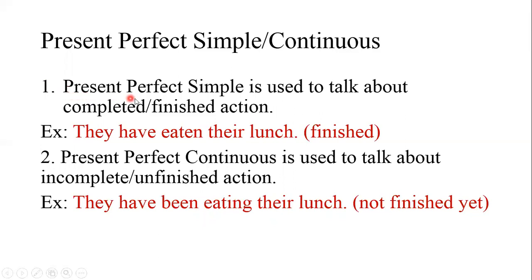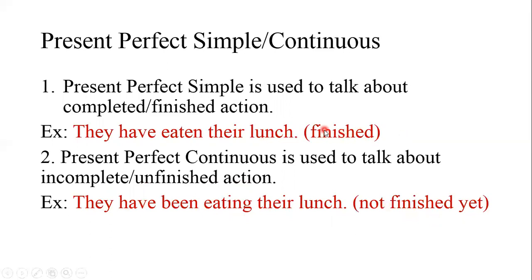Number one: present perfect simple is used to talk about a completed or finished action. Example: 'They have eaten their lunch' — it's finished; they don't eat anymore now. But present perfect continuous is used to talk about an incomplete or unfinished action. Example: 'They have been eating their lunch' — it means not finished yet; they are still eating. So note the difference: present perfect simple is complete, present perfect continuous is incomplete.